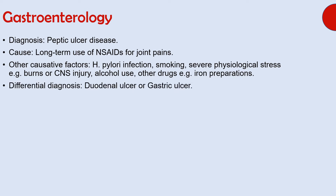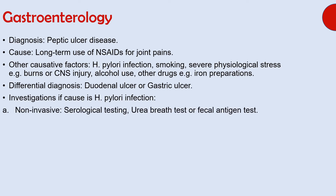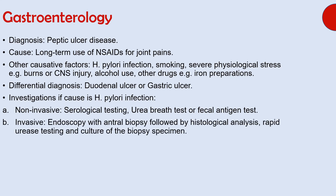The two differential diagnoses include duodenal ulcer or gastric ulcer. The question also asked about investigations if the cause of peptic ulcer disease is a bacterial infection, usually H. pylori. Non-invasive investigations include serological testing, urea breath test, or fecal antigen test. Invasive investigations include endoscopy with antral biopsy followed by histological analysis, rapid urease testing, and culture of that biopsy specimen.